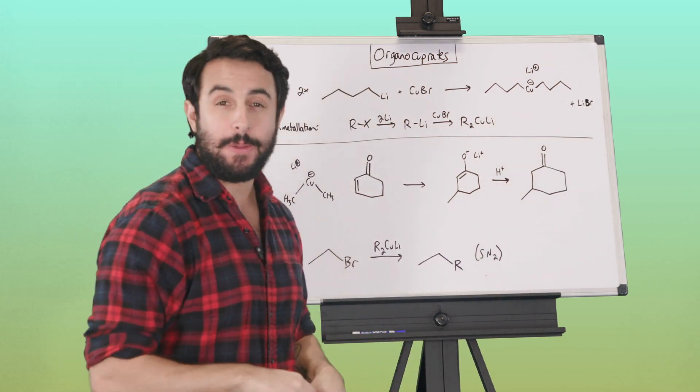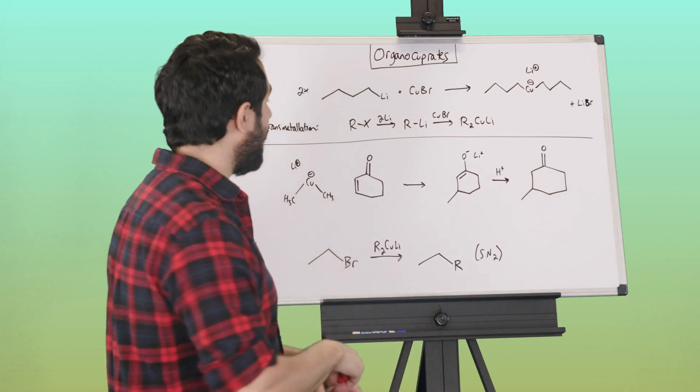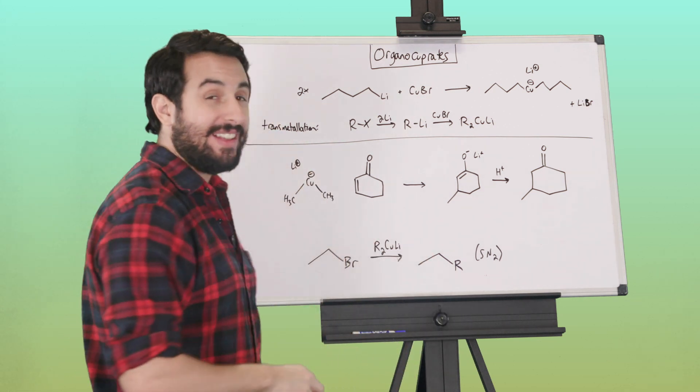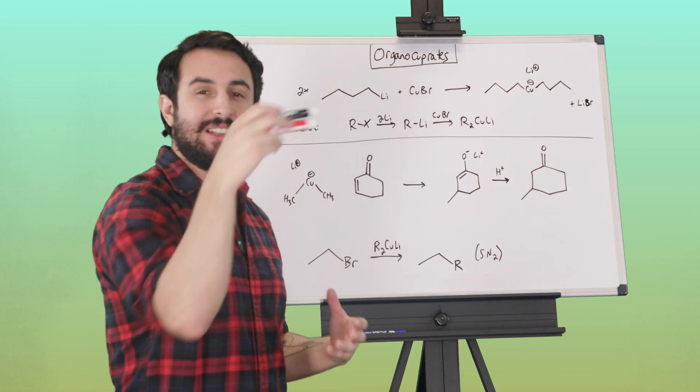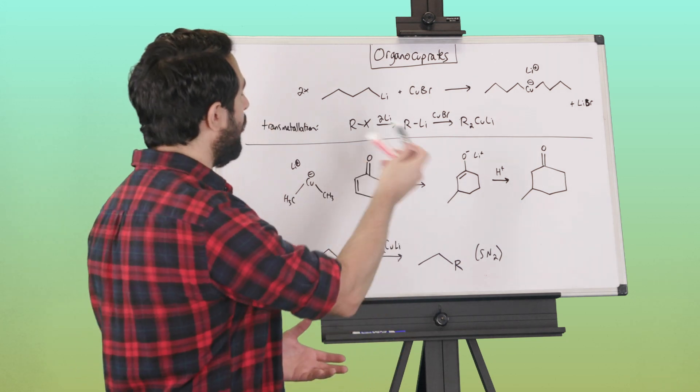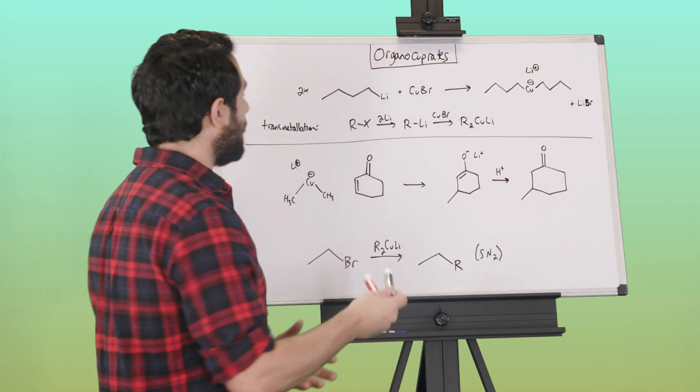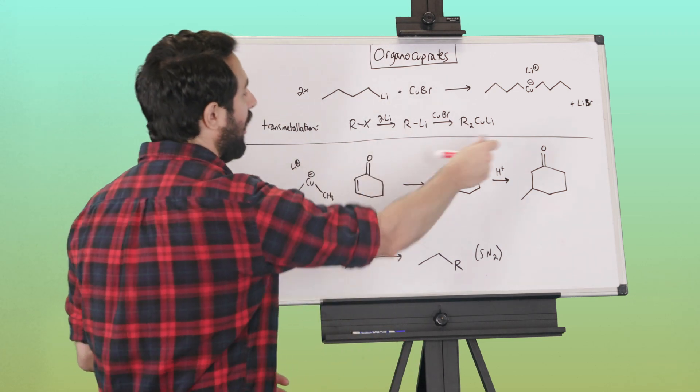This is a little bit different from the way we prepare both Grignard and organolithium. In fact, we need to do this—it's called transmetallation—because copper doesn't insert itself into these. It doesn't do the kind of chemistry that lithium and magnesium do, so we have to use something else first.